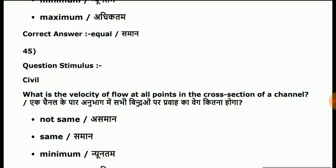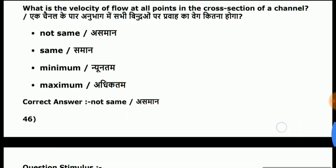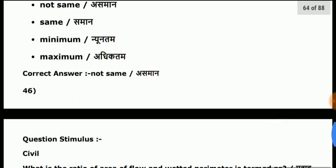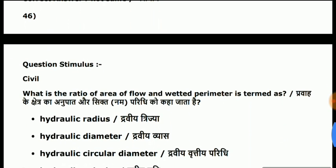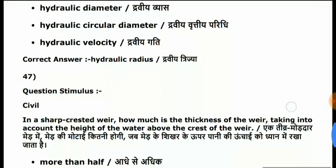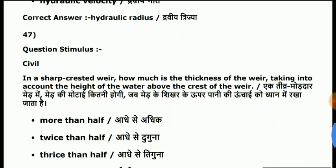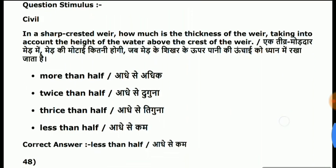Question 45: what is the value of flow at all points in the cross section of a channel? Answer is not the same. Question 46: what is the ratio of area of flow and wetted perimeter termed as? Answer is hydraulic radius. Question 47: in a sharp-crested weir, how much is the thickness of the weir, taking into account the height of water above the crest? Answer is less than half.